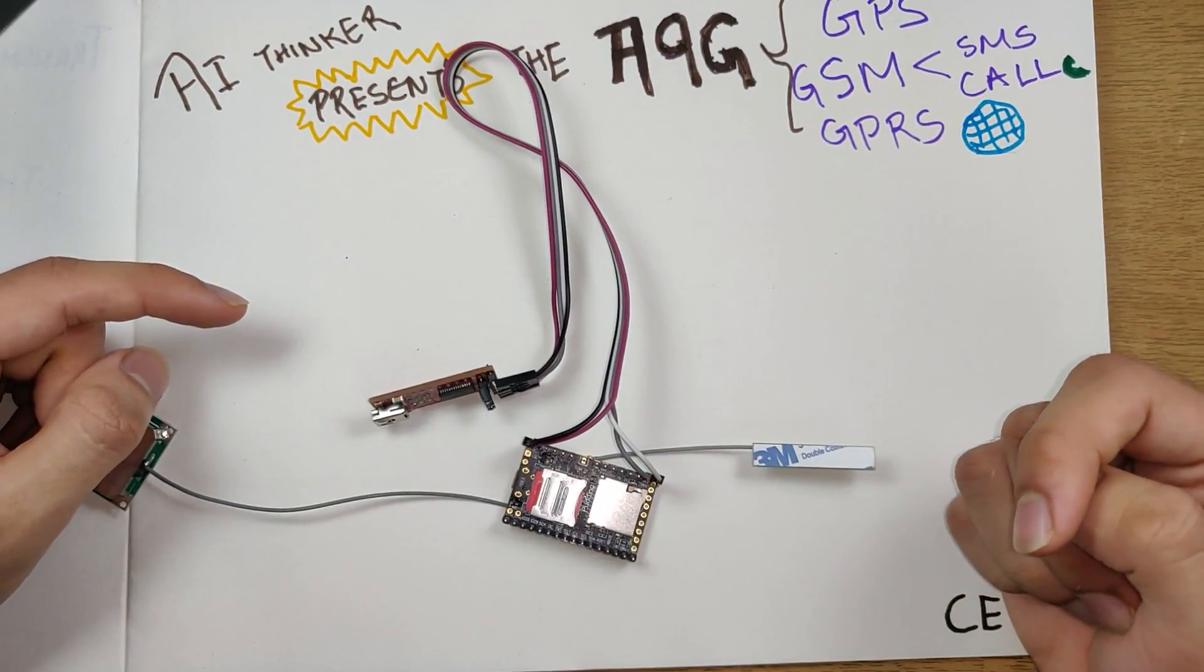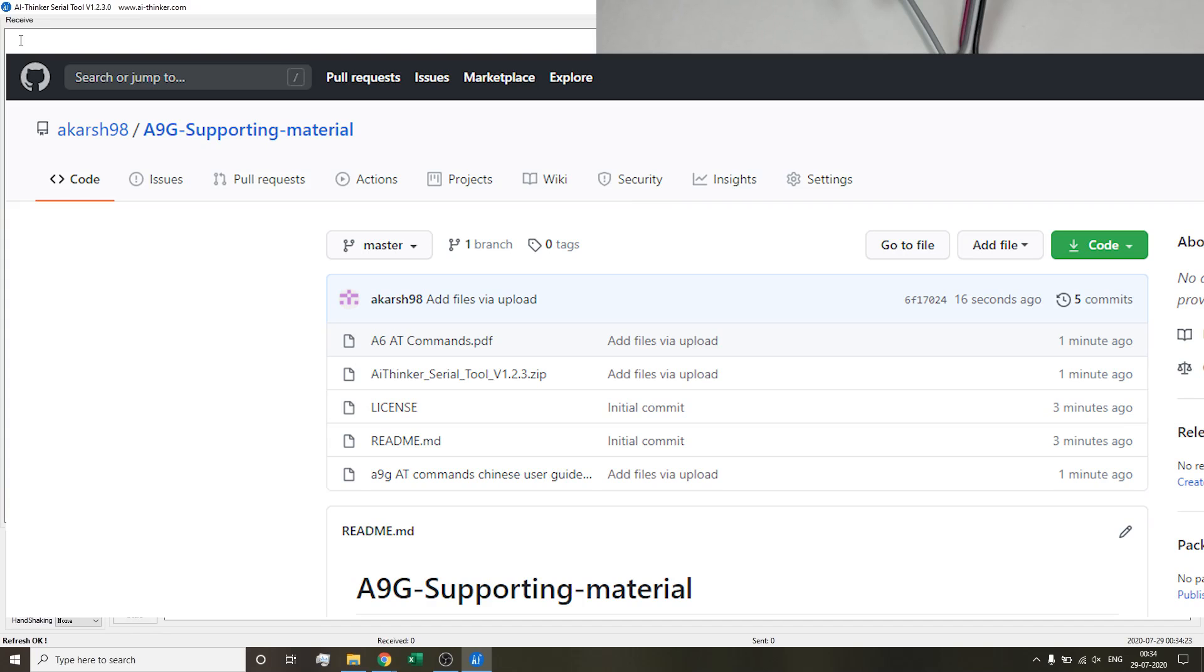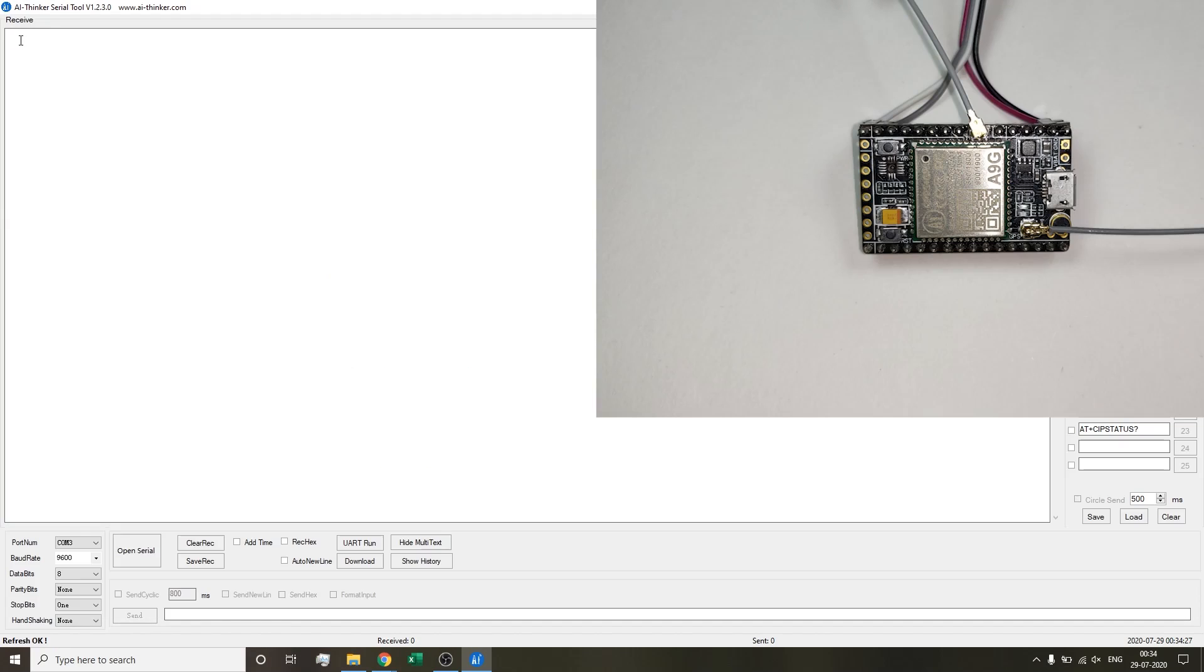The white wire coming from here will go to the RX of the USB to serial module, and the TX of the USB to serial module will go to the RX, that is the gray wire, of the A9G module. Now we are all set to go. We just need to connect this module to our laptop and let's head over to see what exciting AT commands we can write for this module to function.